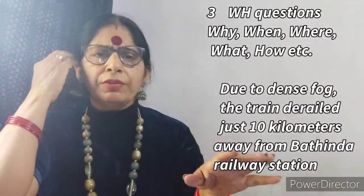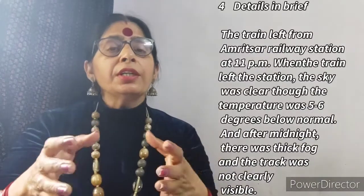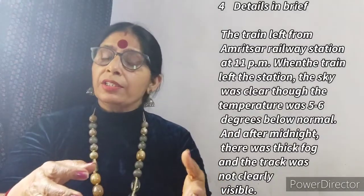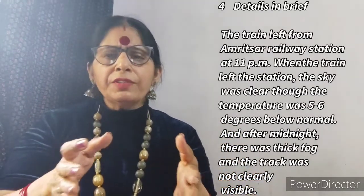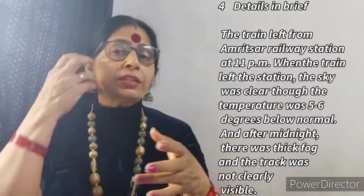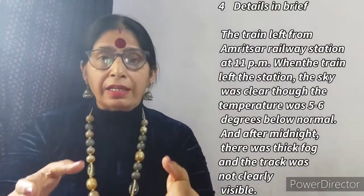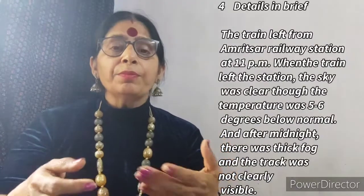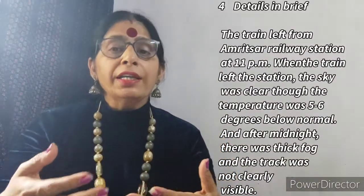The fourth value point is details in brief. We need to give more details but in brief — no need to elaborate too much. For example: 'The train left Amritsar Railway Station at 11 PM. When the train left the station, the sky was clear though the temperature was five to six degrees below normal. After midnight there was thick fog and the track was not clearly visible, causing the derailment.' This is the detail given in brief.